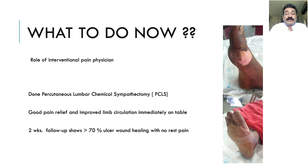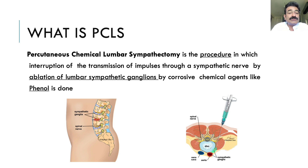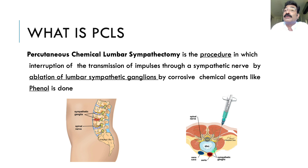So what is PCLS? Percutaneous chemical lumbar sympathotomy is a procedure involving the interruption of impulse transmission through the sympathetic nerve or ganglion by ablation of the lumbar sympathetic ganglion using corrosive chemical agents like phenol or alcohol.